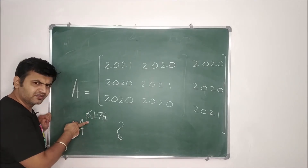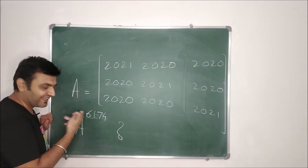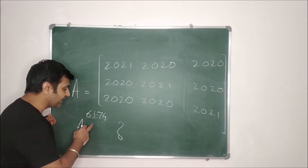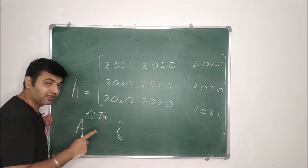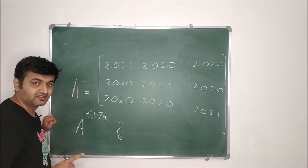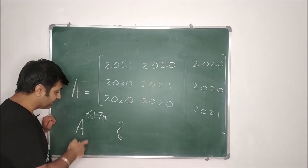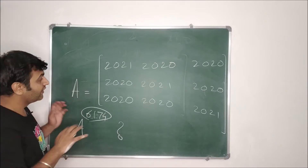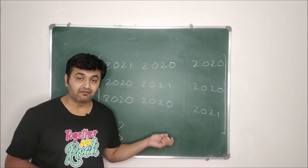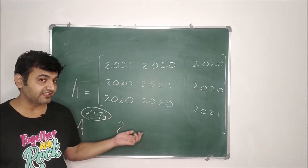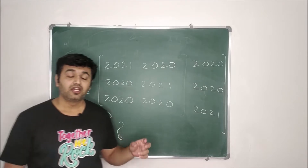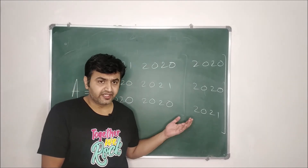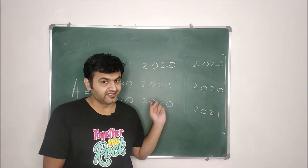Why did I take 6174? I like this number because there is a very good mystery behind it, and I have recorded a lecture on that too — see the link in the description. Now coming to this problem, I want to find eigenvalues and eigenvectors for this matrix. I am going to use two important results which I will state first, and then we will come back to this problem.